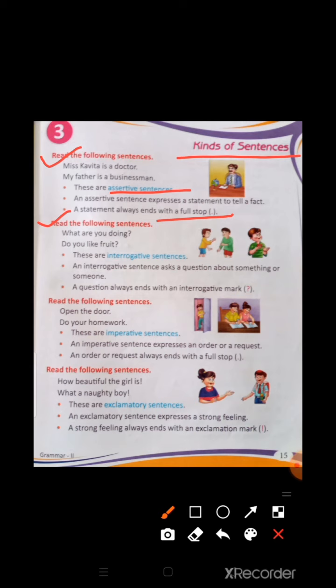Read the following sentences: What are you doing? Do you like fruit? These are interrogative sentences. An interrogative sentence asks a question about something or someone. A question always ends with an interrogative mark or question mark.